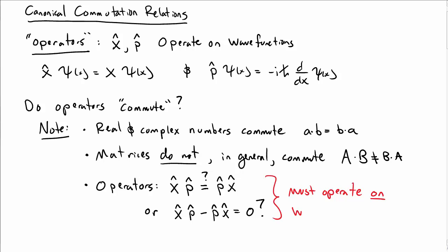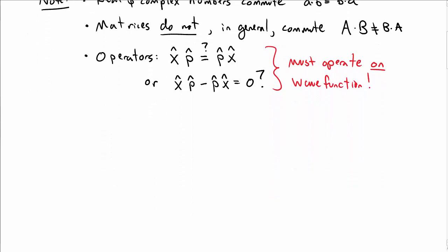In order to make sense of this, though, we should have these operating on a wave function. That's the only sense in which we know what operators are. So to answer this question, let's operate them on wave functions. Let's take x-hat p-hat minus p-hat x-hat operating on a wave function.